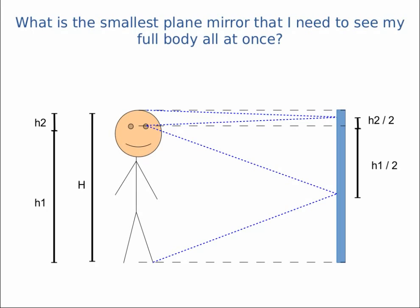We know that the distance from the point at which the light hits the mirror and the point at which the light enters my eyes must be h1 over 2 and h2 over 2. That's because the angle of incidence must equal the angle of reflection.